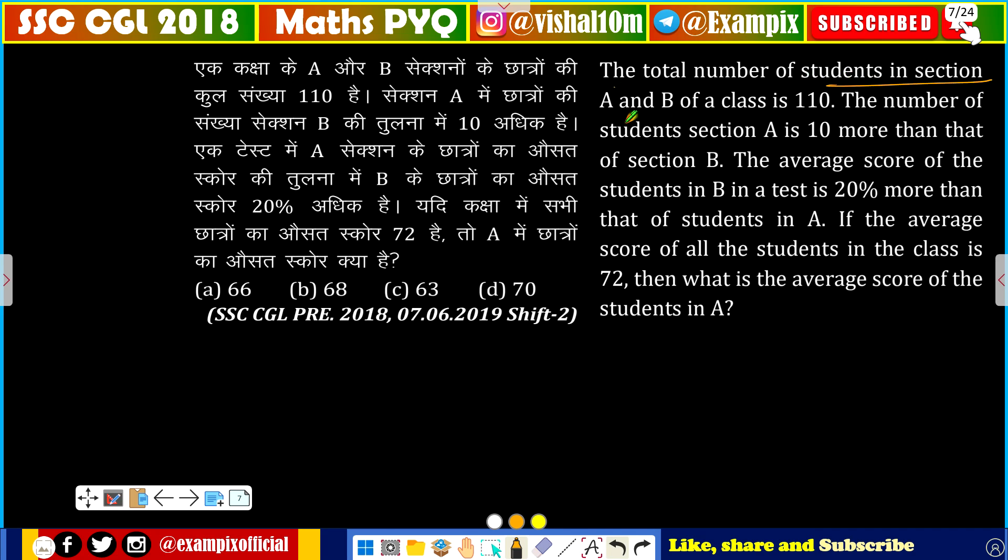The total number of students in section A and B of a class is 110. The number of students in section A is 10 more than that of B.